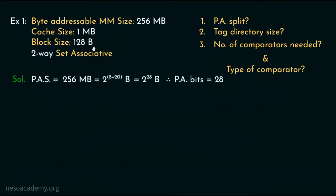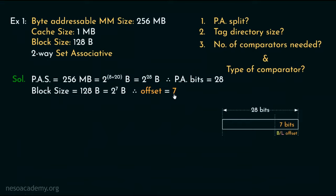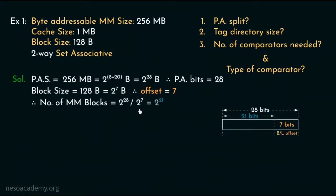The block size is given as 128 bytes, which can also be written as 2 to the power 7 bytes. Therefore for offset we will be needing 7 bits — the least significant 7 bits of the 28-bit physical address will be used for block or line offset. Now to find out the number of blocks inside the main memory, we divide 2 to the power 28 by 2 to the power 7, giving us 2 to the power 21, and therefore 21 bits will be used for the block numbers.